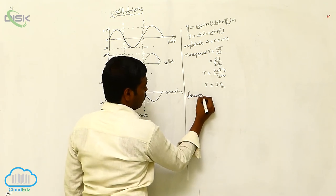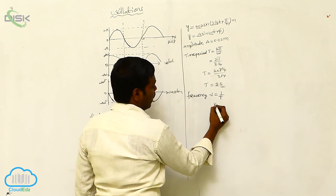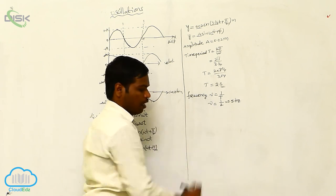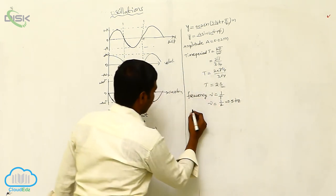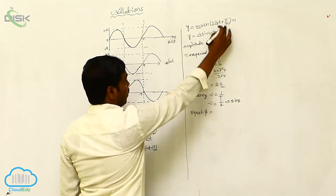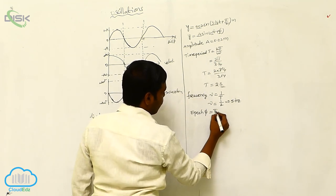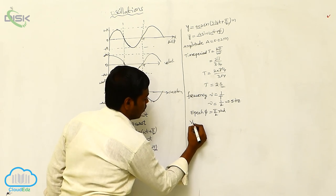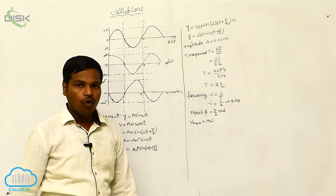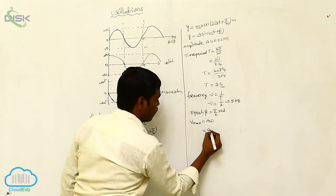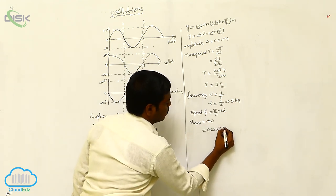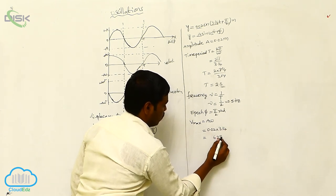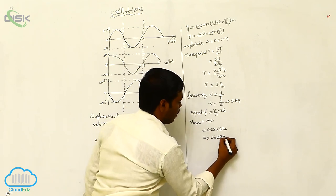Frequency nu is equal to 1 by time period, that is 1 by 2, which means 0.5 hertz. This is the frequency of the particle. The phase angle phi is equal to pi/2 radians. This is the phase angle of the particle. The maximum velocity is a times omega: 0.02 into 3.14, therefore we get 0.0628 meter per second.